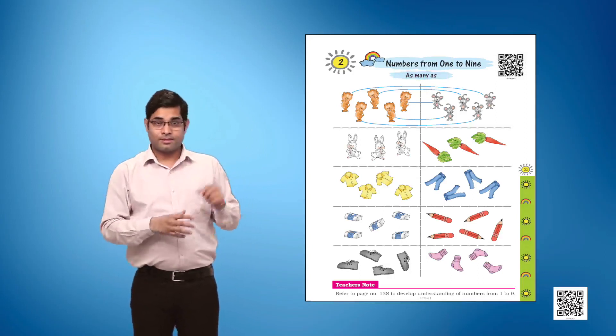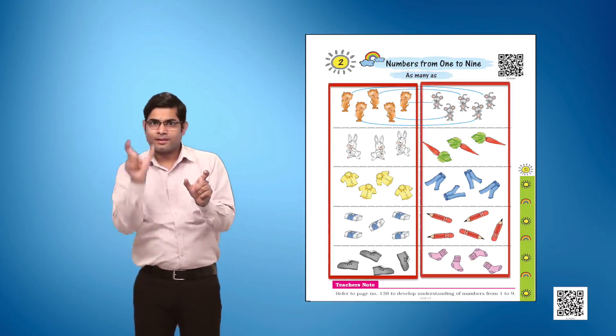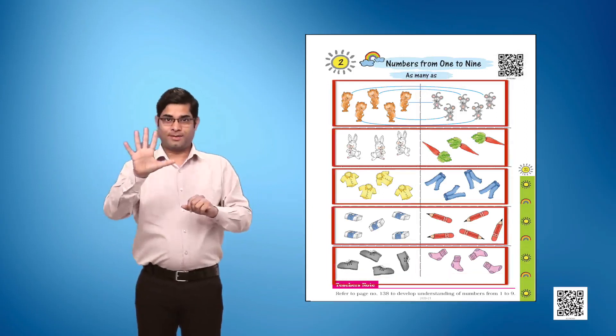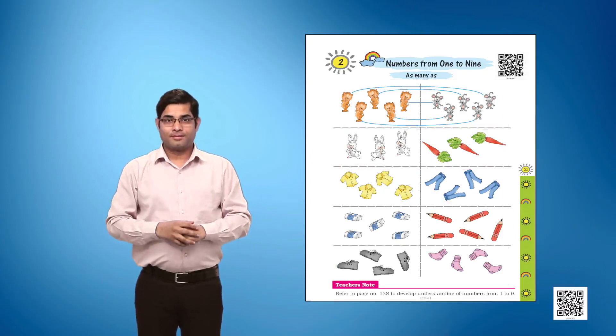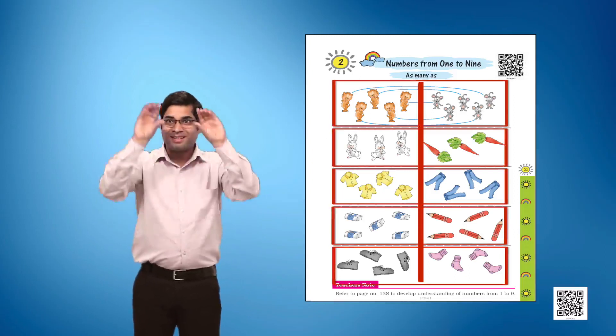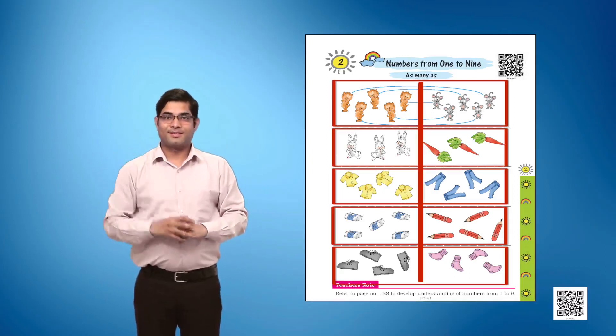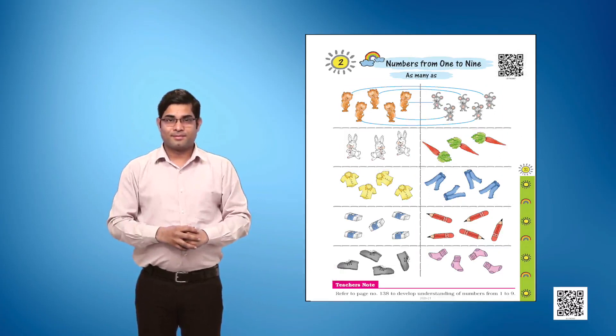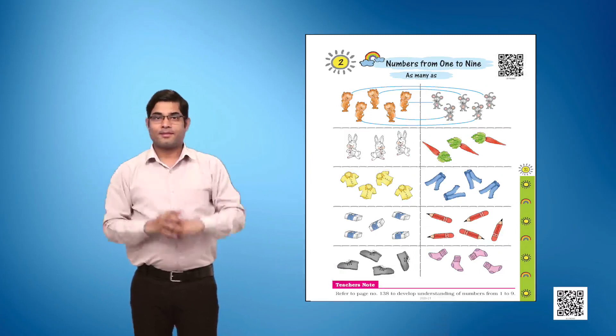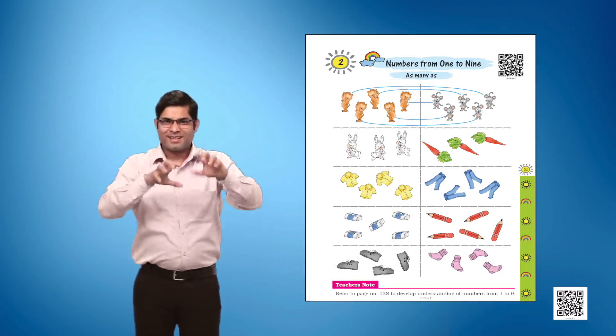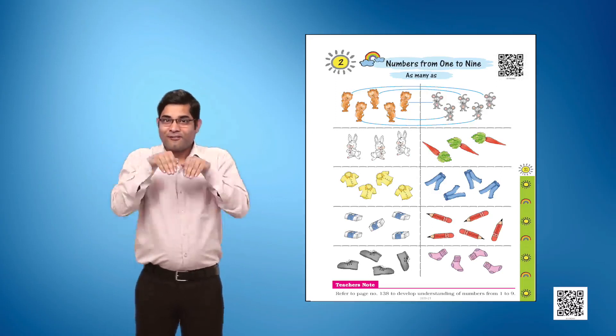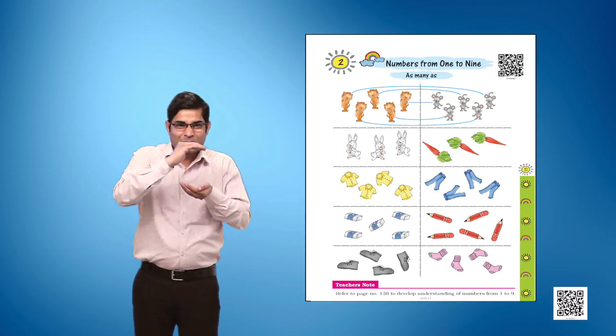This page is divided into 2 columns and 5 rows, creating 10 parts in total. Each part has a picture. Before beginning to read this page, let's become familiar with the animals and objects.